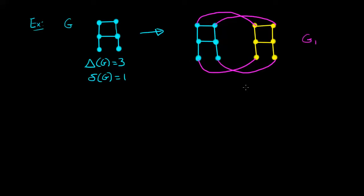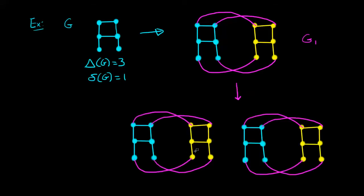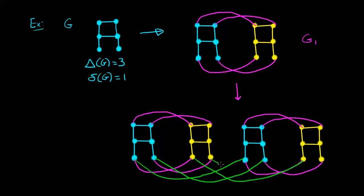Now g1 is not three-regular because there are still some vertices of degree two — those are the ones right along the bottom. So we repeat the process and copy out the graph twice. We take a look at the vertices of degree less than three, those of degree two, and join them up to their corresponding vertices in the other copy. When we've done that, this graph is called g2, and now we can check that g2 is in fact three-regular.